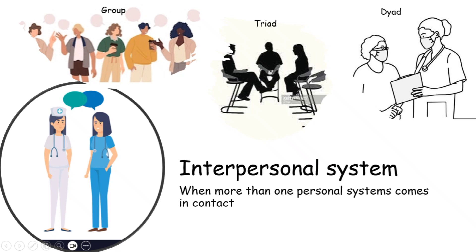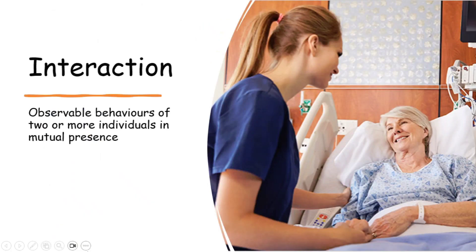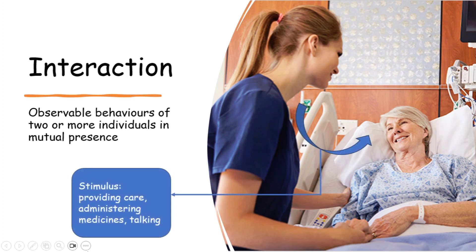Now we will look at the concepts under interpersonal system. The first one is interaction. Interactions are defined as the observable behaviors of two or more individuals in mutual presence. For example, a nurse is providing care to a patient, administering medicines, or talking to a patient, and the patient responds accordingly. Interaction means not always talking — it's any behavior that can be observed by others from outside.